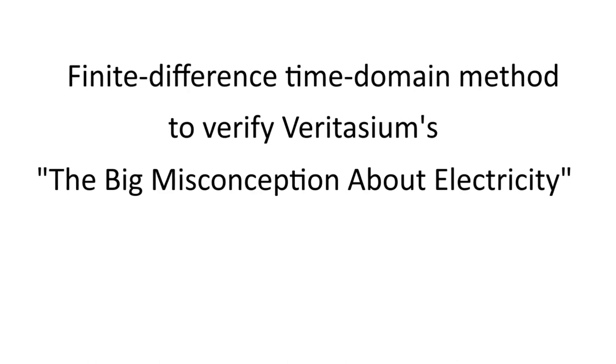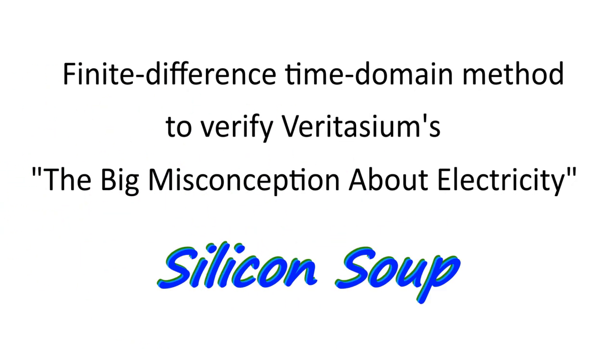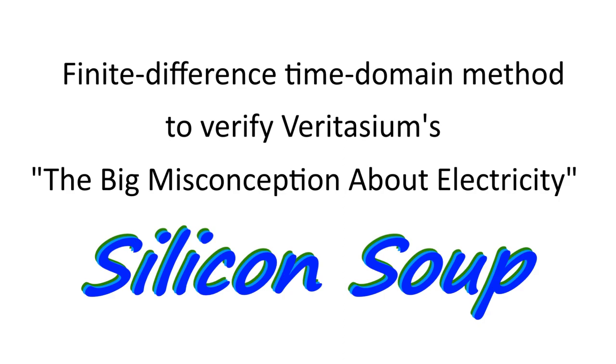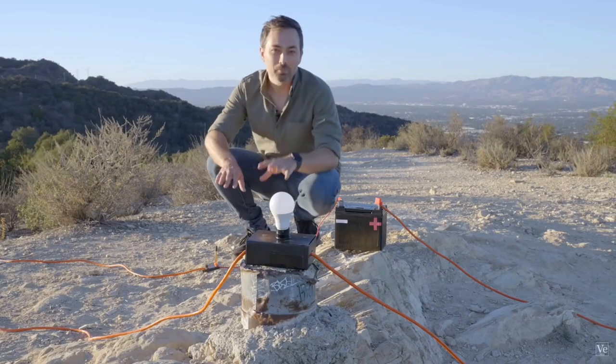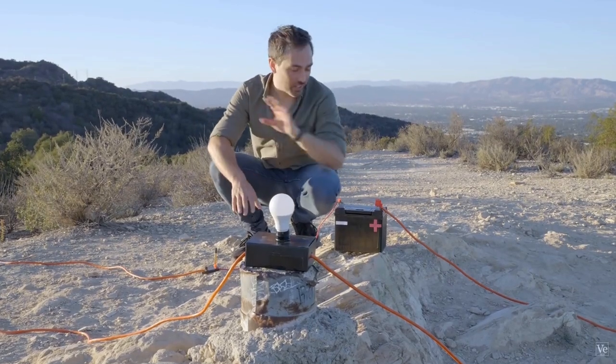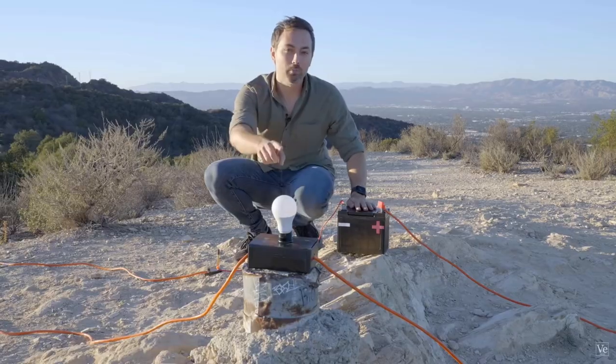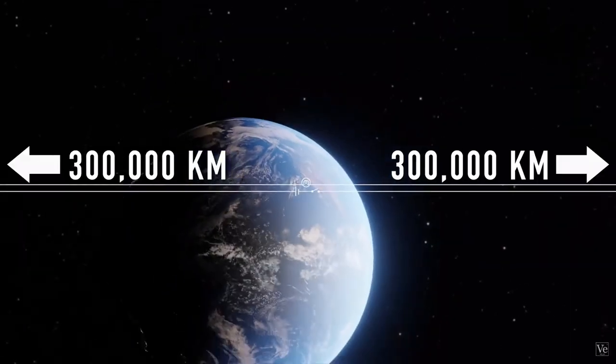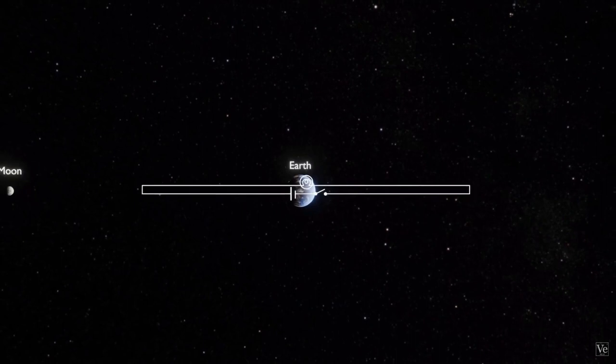In this video, I'm going to use the finite difference time domain method to answer Veritasium's interesting questions. Imagine you have a giant circuit consisting of a battery, a switch, a light bulb, and two wires which are each 300,000 kilometers long.